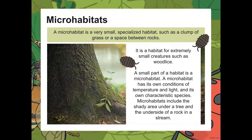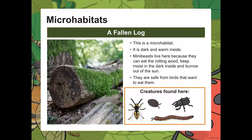A micro habitat can be as small as a clump of grass or a space between rocks — it is a habitat for extremely small creatures such as woodlice. Micro habitats have their own conditions of temperature and light, and their own characteristic species. For example, a fallen log is a micro habitat: it is dark and warm inside, many mini beasts live there because they eat the rotting wood, stay moist, and are safe from predators like birds.